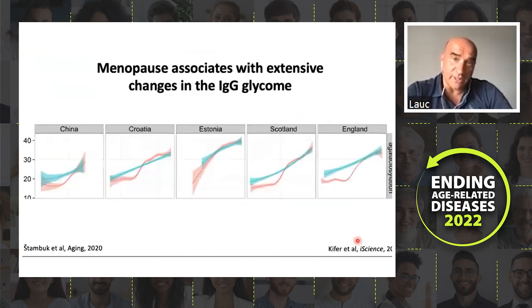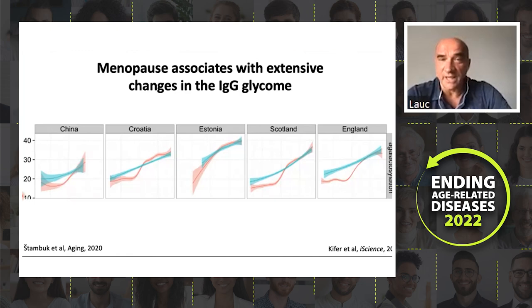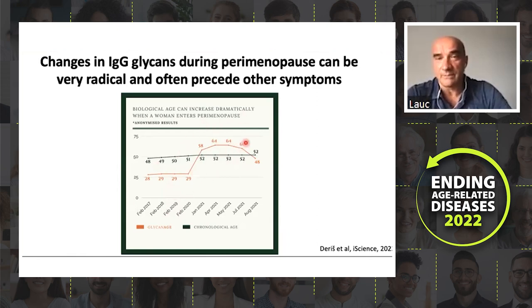We also know that menopause is associated with very extensive changes in IgG glycome. There is a rapid acceleration of glycan aging in the period around menopause. At the individual level, somebody can have a very favorable glycan age and then the glycans will go haywire — this particular lady aged 35 glycan years in less than a year. This often happens before any other symptoms of perimenopause. But with optimal therapy, it can be reverted and go back in the favorable direction.